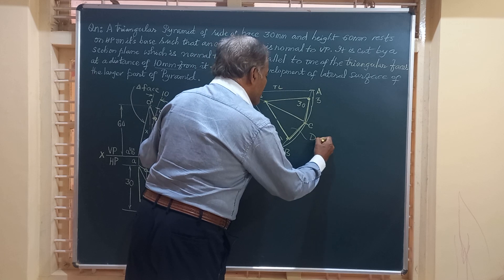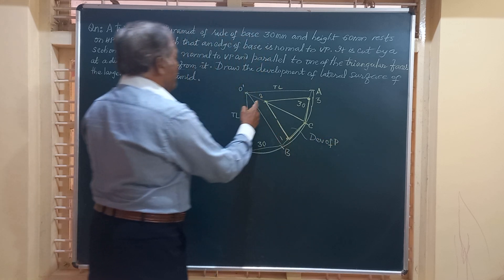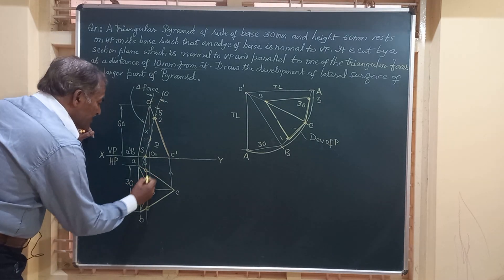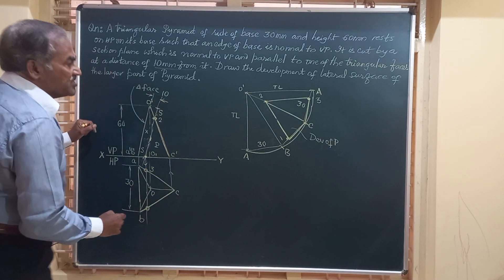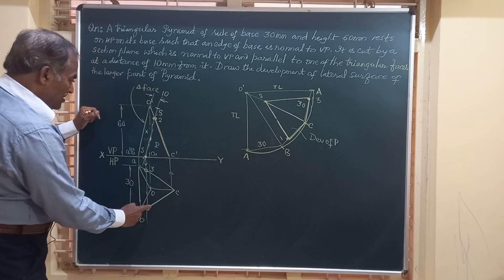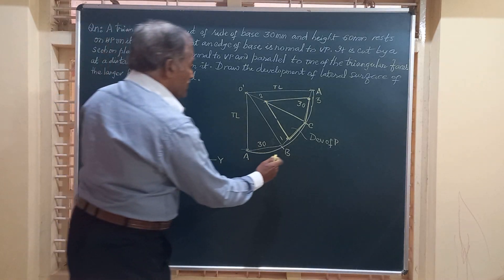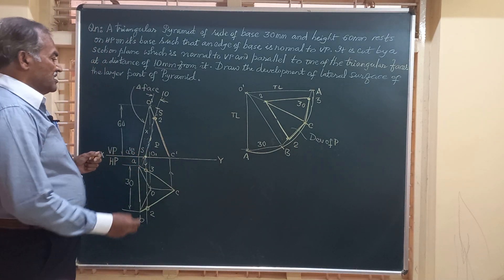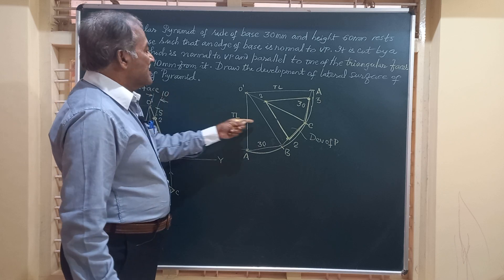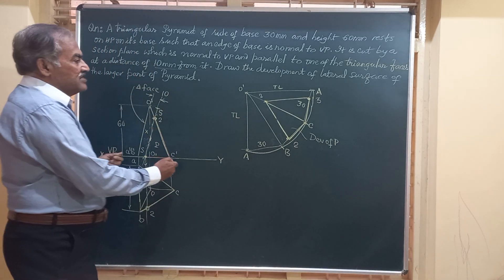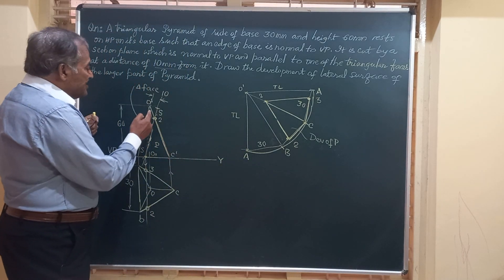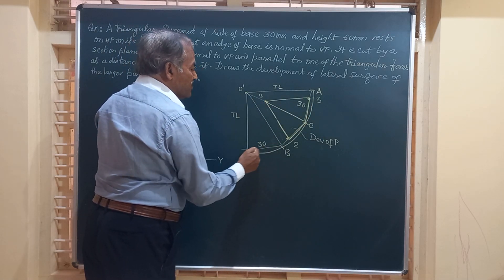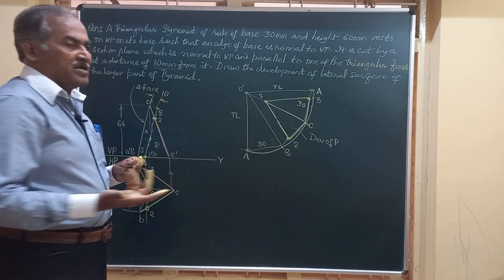This is the development of the larger retained part P. If the question asks for the development of the other part P-dash, you remove the larger portion and retain only the cut-off region — that gives the development of P-dash. To verify: in portion P, edges OA and OB are removed, so those lines and their connecting construction lines don't exist. However, in your actual drawing, you must show all construction lines as very thin lines just visible.